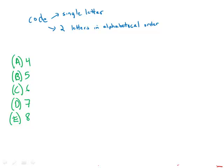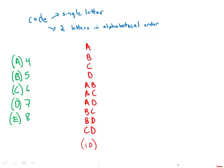Let's try four, which is the lowest number given. If we have four letters — A, B, C, and D — those are the single letter codes allowed. Then we could have AB, AC, AD, BC, BD, and CD. Notice we can't have BA or CA because the letters have to be in alphabetical order. So there are a total of 10 possible codes if we use four letters. That's not quite enough, so four is not going to work.